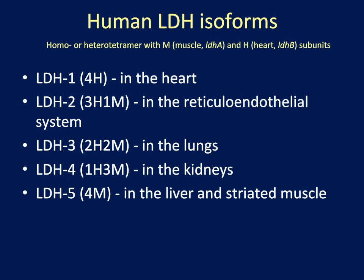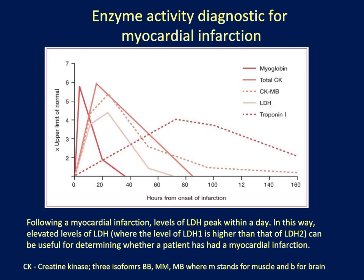LDH2 is expressed in the reticuloendothelial system, LDH3 in the lungs, and LDH4 in the kidneys. LDH activity is often used as a diagnostic for myocardial infarction, or heart attack. If monitoring several enzymes' activity over time after the onset of the infarction, you can see that several of these enzymes spike at different times. LDH has a spike in activity almost immediately after the infarction and up to 80 hours or longer after the infarction. Other enzymes such as creatine kinase, troponin-I, and creatine kinase isoforms can also be used to diagnose myocardial infarction.